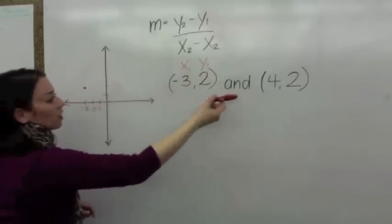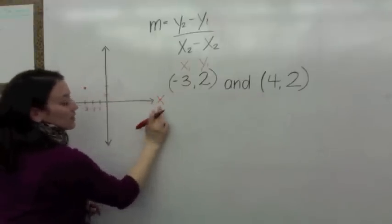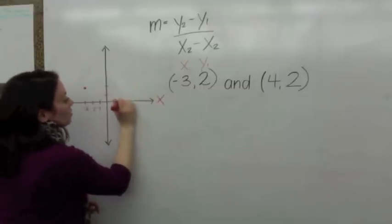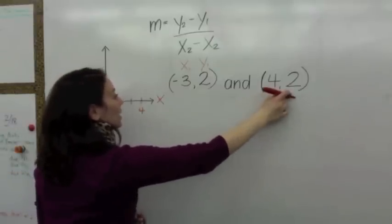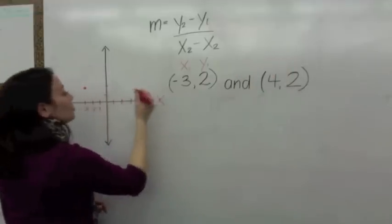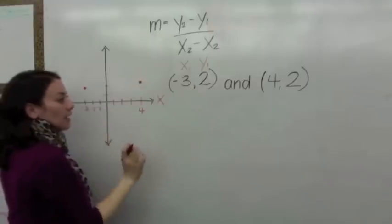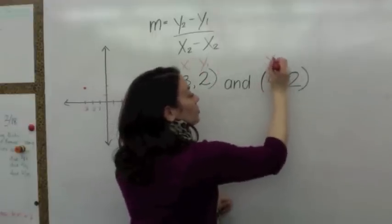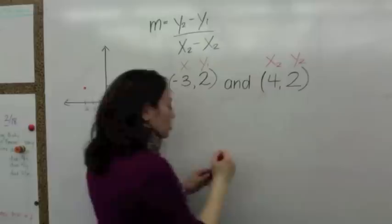The second point is positive 4, positive 2. We start on the x-axis at positive 4 and go up 2. Don't connect the points yet — this is your second point, so we're going to label it x2, y2.